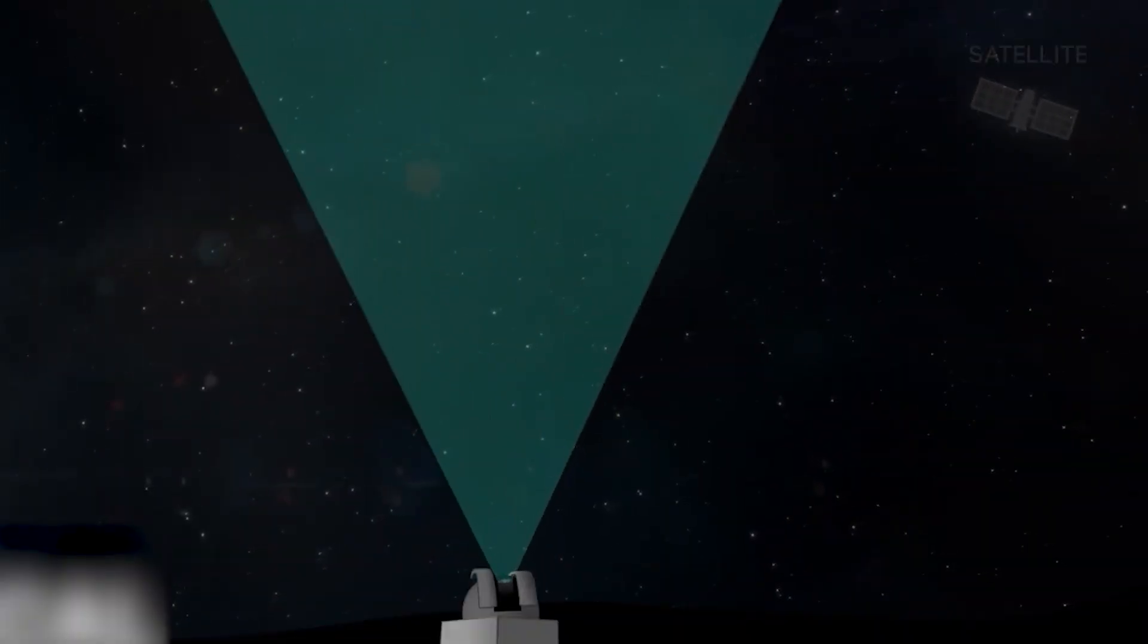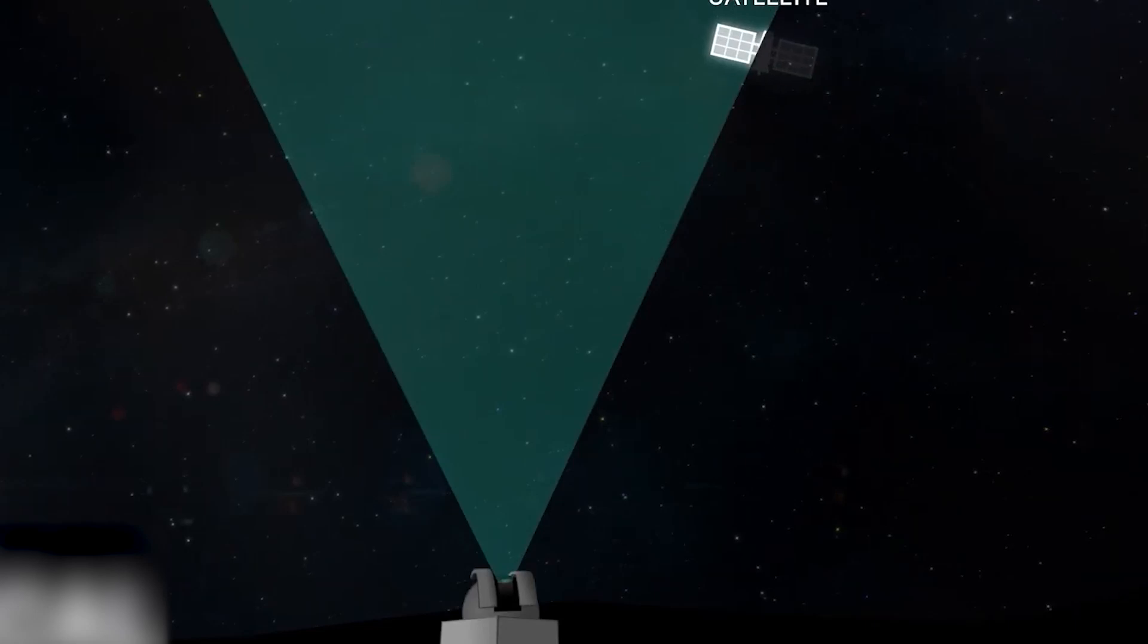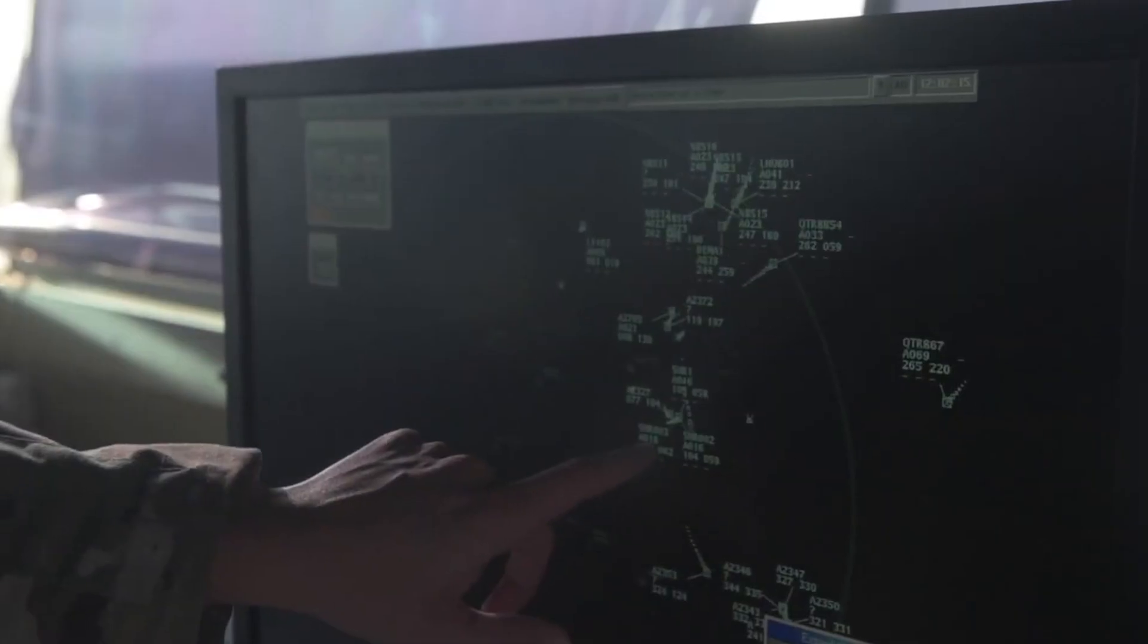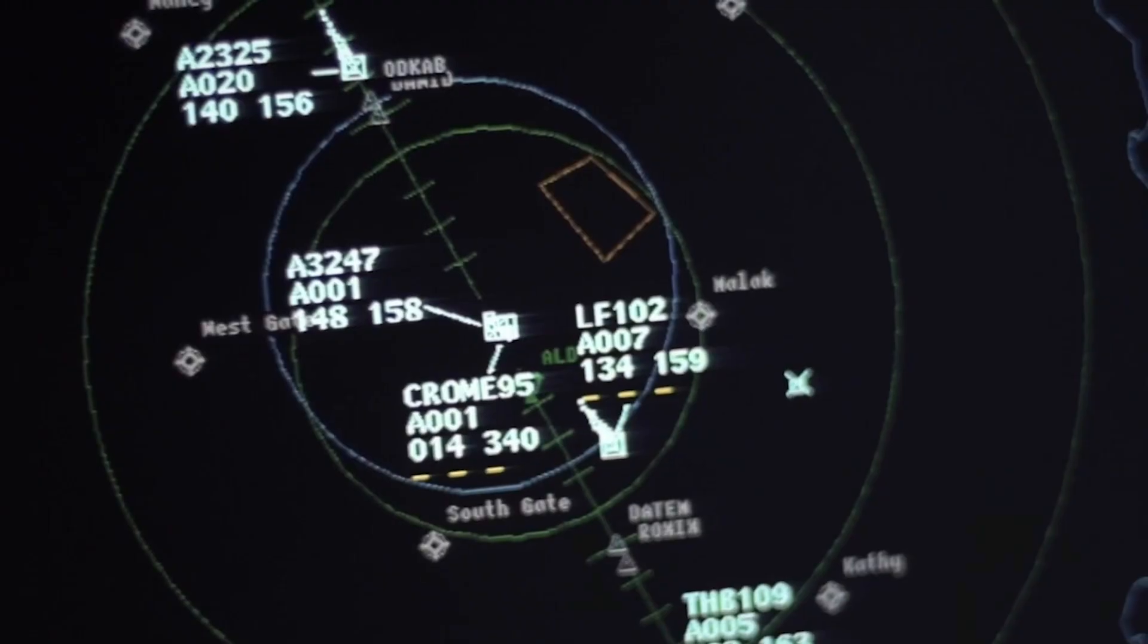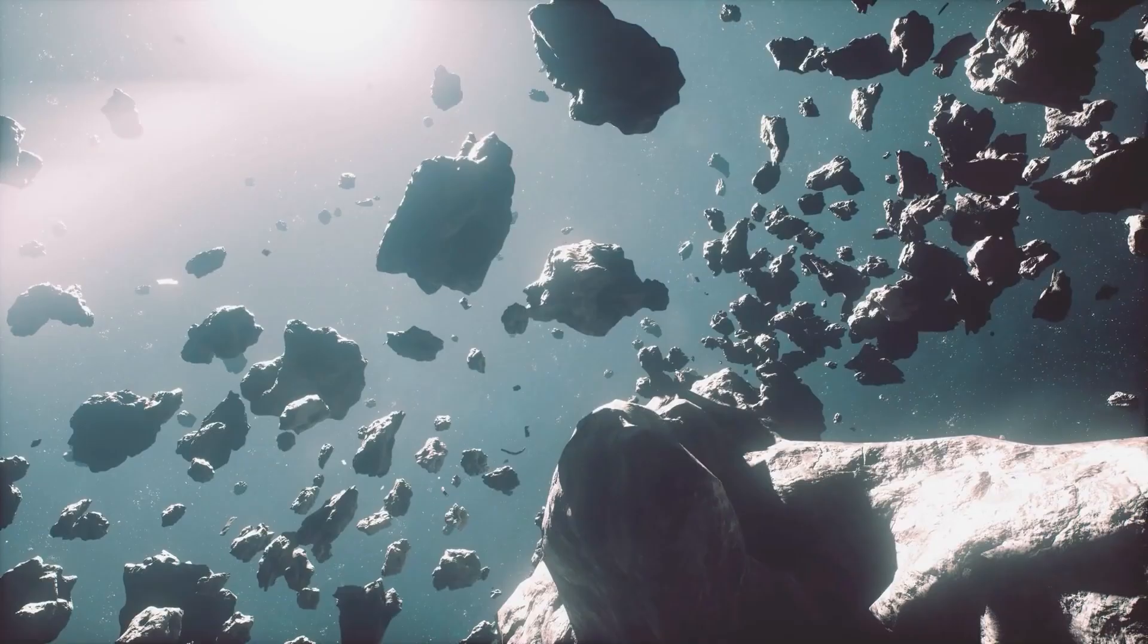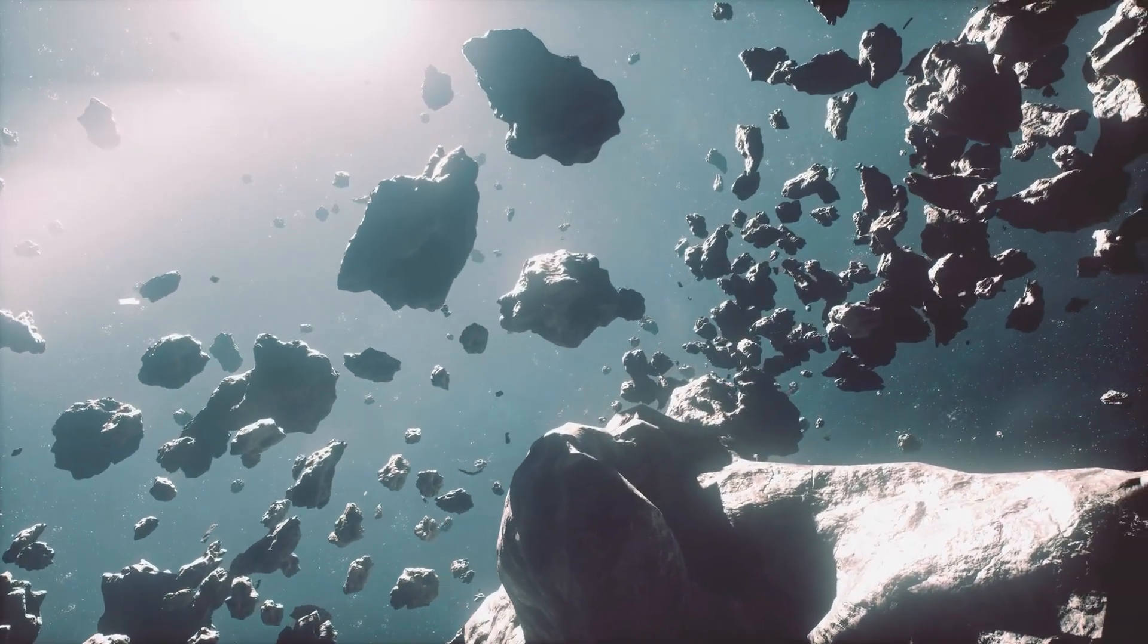It's like air traffic control, but for everything orbiting our planet. And believe me, there's a lot up there. Currently, the Space Force's Space Surveillance Network tracks over 28,000 pieces of space junk larger than a softball, each one a potential orbital bullet.